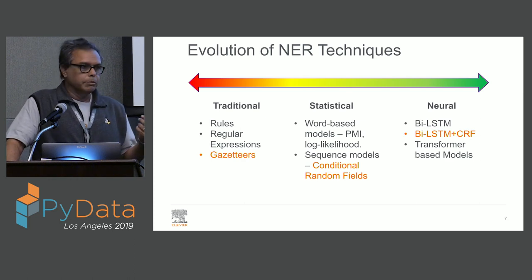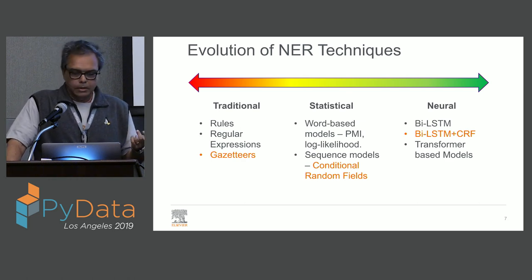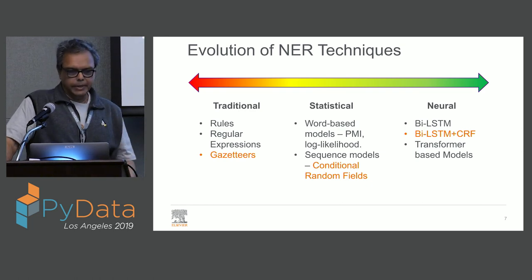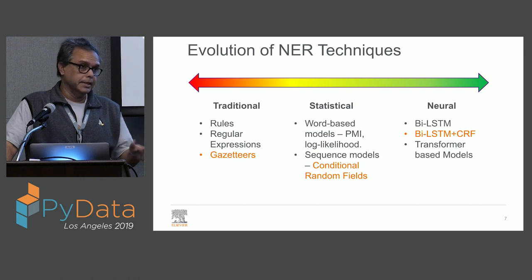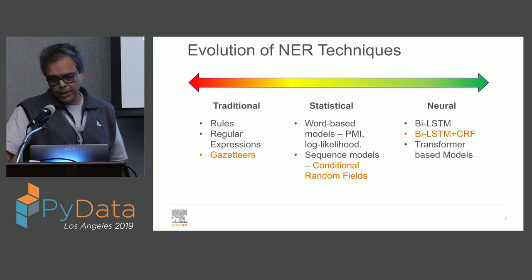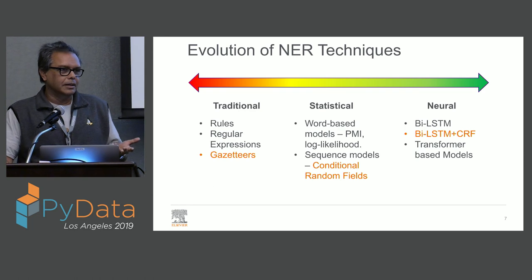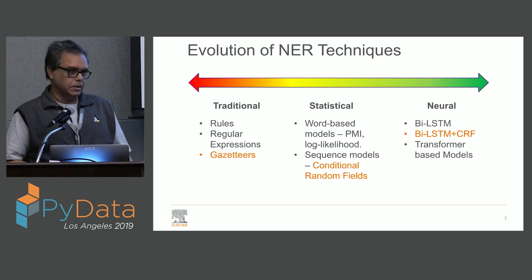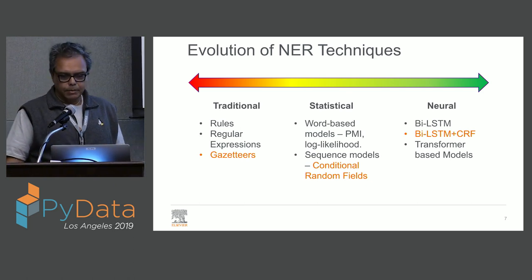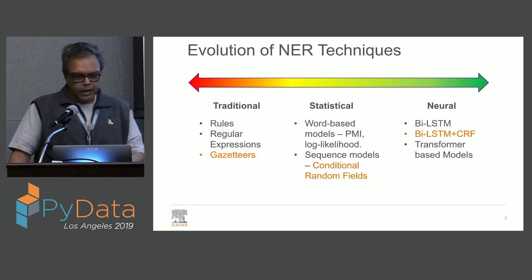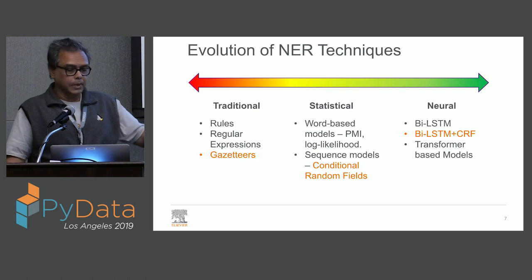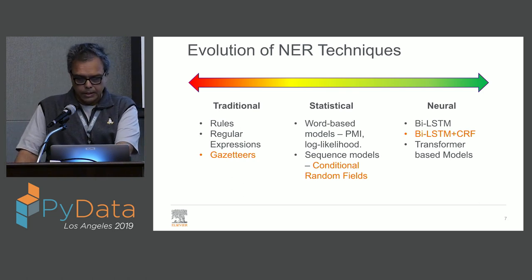On the neural side of things, there is the bi-directional LSTM, which is the basic building block of NER, as well as a lot of other things like part-of-speech tagging. But most real neural models for NER also include a CRF head — conditional random fields. And of course, since the beginning of this year, there has been a bunch of transformer-based models. The ones in orange are the ones that NERDS supports out of the box.